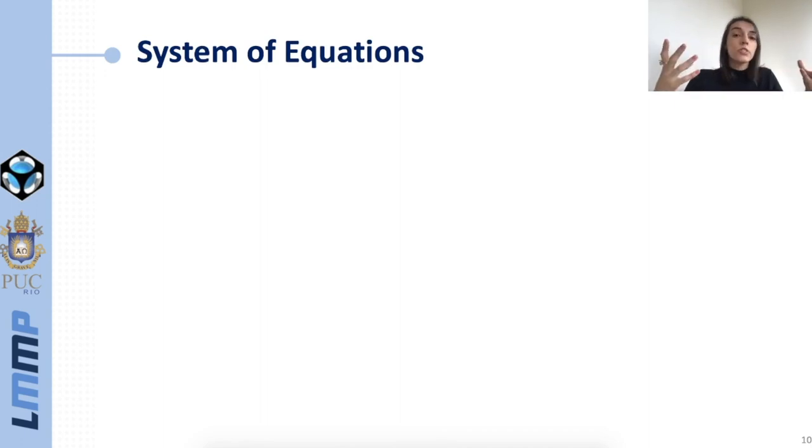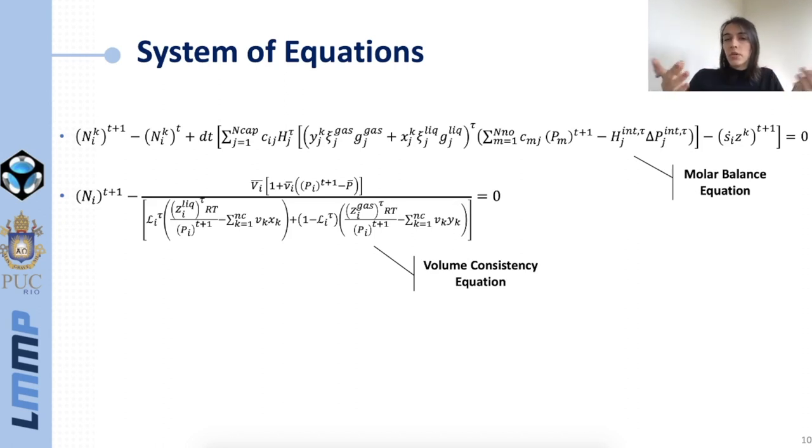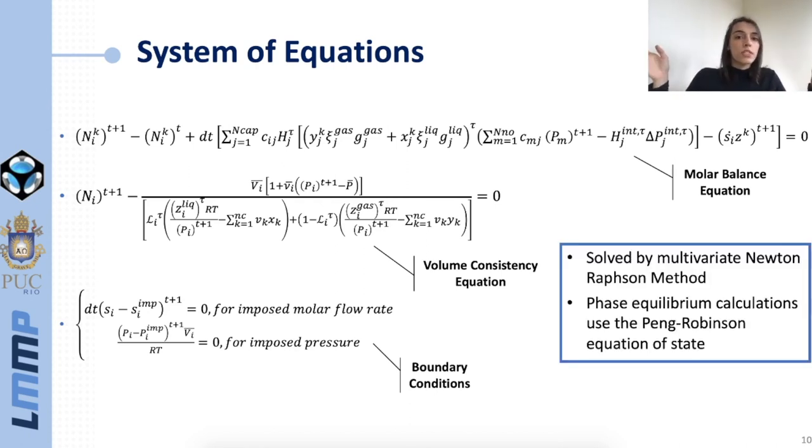Now we move to the system of equations. These equations are solved for each node in the network in each simulation time step. First is the molar balance equation, then the volume consistency equation which basically matches the volume of the pore with the volume of the phases inside the pore, and finally some boundary condition equations that we use to impose either molar flow rate or pressure in the network boundaries. Those equations form a very big system of nonlinear equations which is solved with the Newton-Raphson method while the phase equilibrium calculations use the Peng-Robinson equation of state.